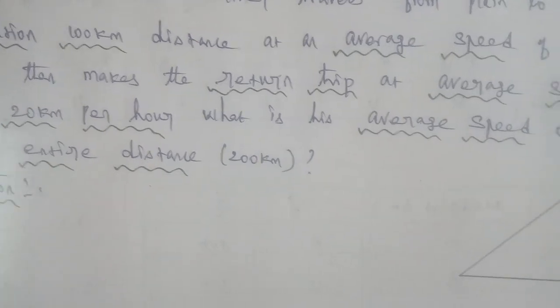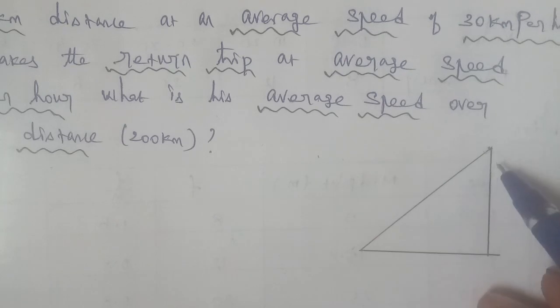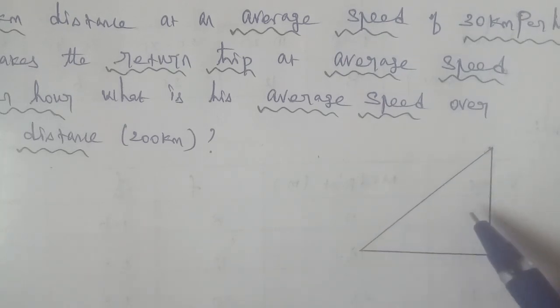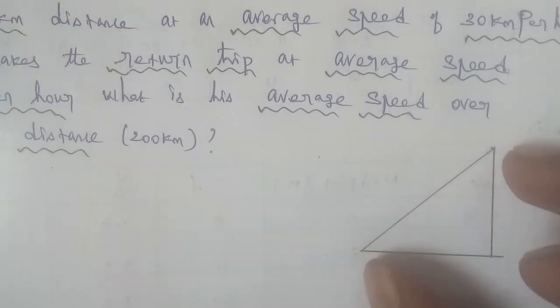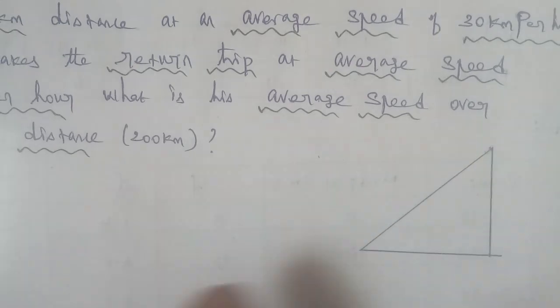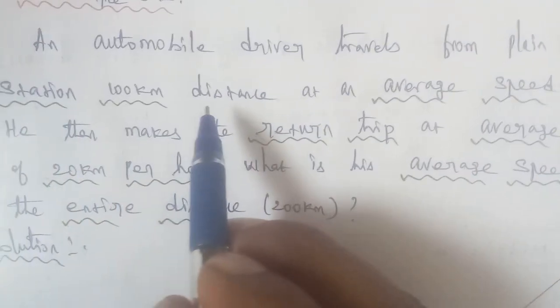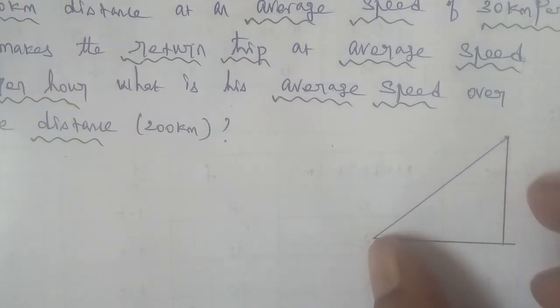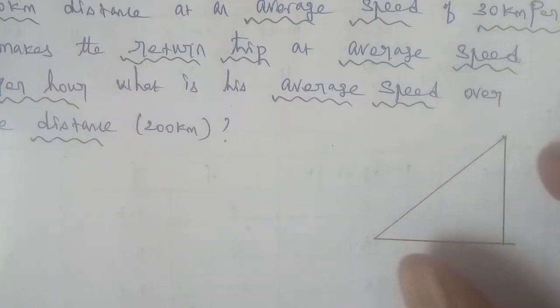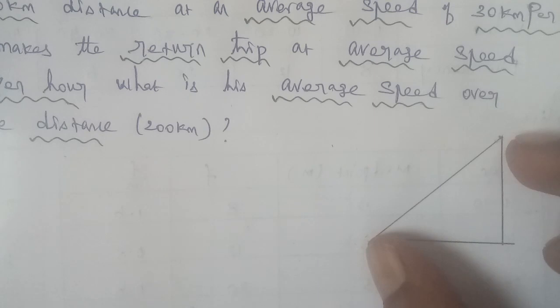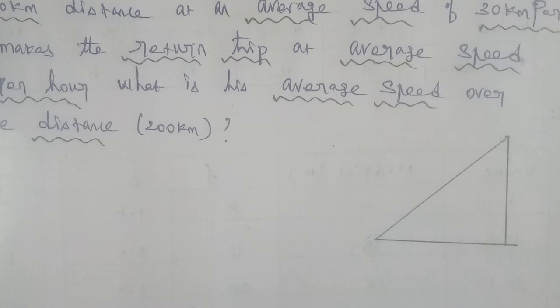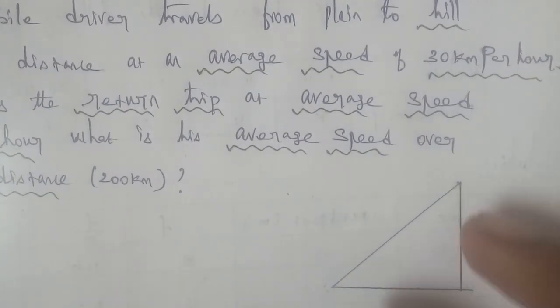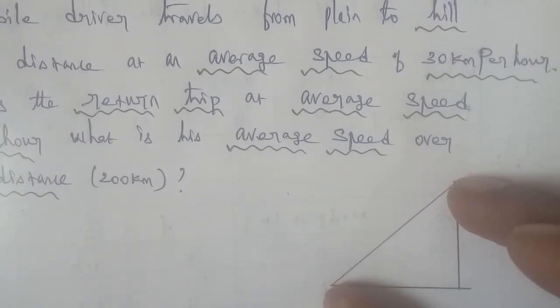Let's understand the question. Drawing a rough diagram here. There's a hill station, distance is 100 km. An automobile driver travels this 100 km distance at 30 km per hour.